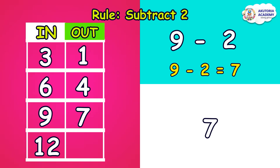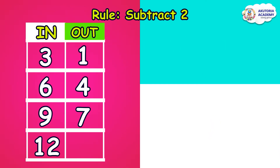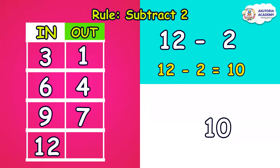The last number is twelve. Our rule says we should subtract two from twelve, so twelve minus two equals ten. If we take away two from twelve, we'll be left with ten. We place our answer, ten, in the out column just beside twelve.